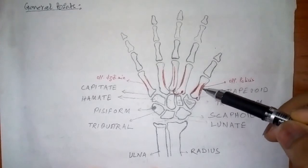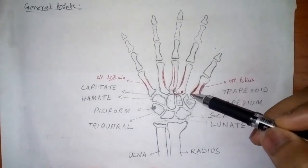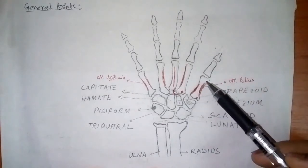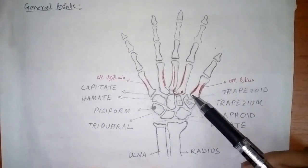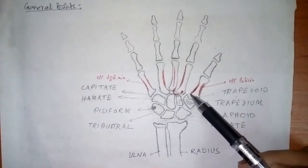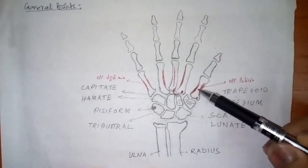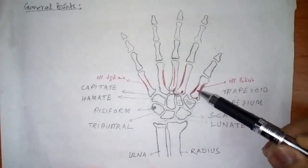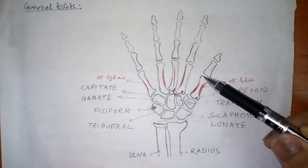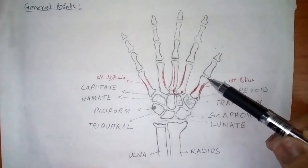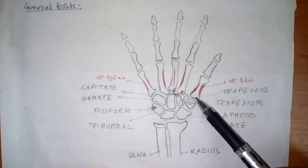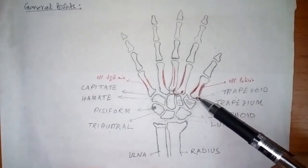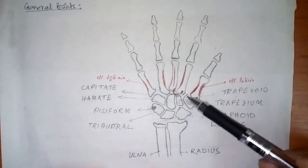For each individual metacarpal bone, there are three important landmarks. The first one is the base — the most proximal part is the base. And as usual for a long bone, this is the shaft. The distal part is the head. Please don't confuse — the head is not the proximal part, it is the distal one. The base is the starting point of the bone, and it articulates with the carpal bones.